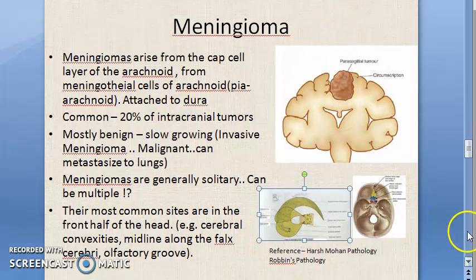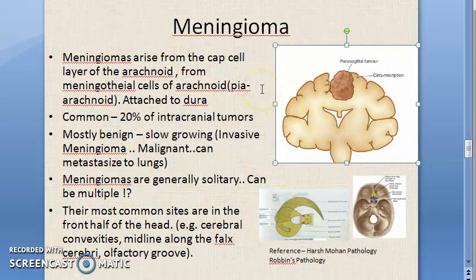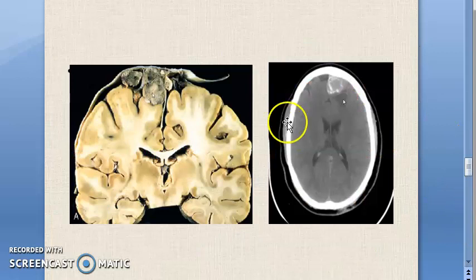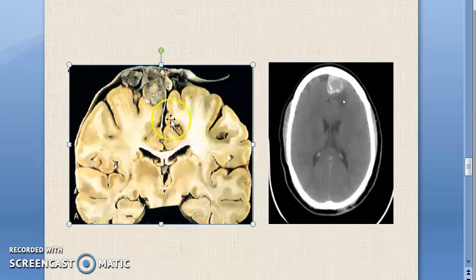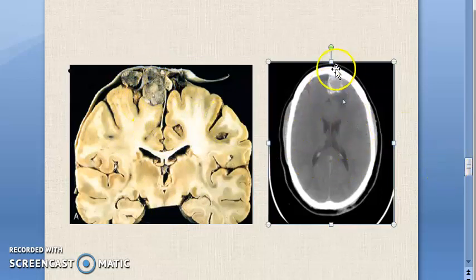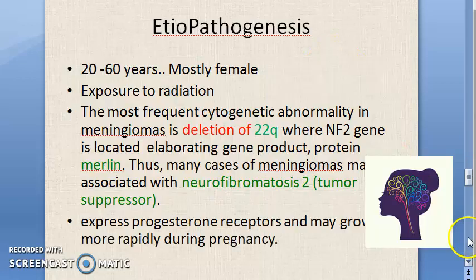To summarize this slide: meningioma arises from the arachnoid, is mostly benign, usually solitary, and is found in the front part of the head. Here are some images showing meningioma - this is from Robbins pathology textbook. This is a CT image with contrast where you can see the meningioma clearly.